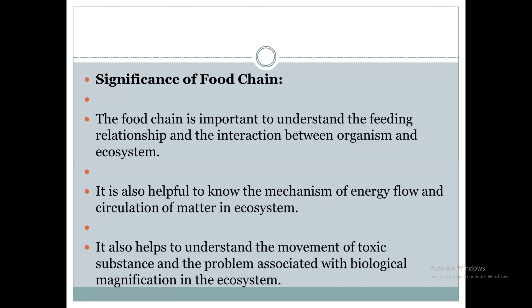The food chain also helps to understand the movement of toxic substances from one system to another system, and the problem associated with biological magnification in the ecosystem. It is important to understand how energy flow occurs and how energy is transmitted from one system to another system. This is the significance of the food chain process.